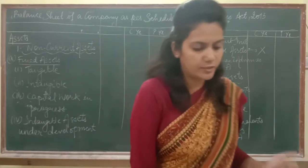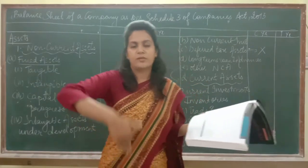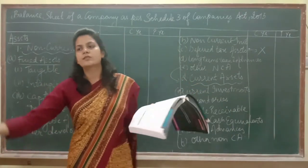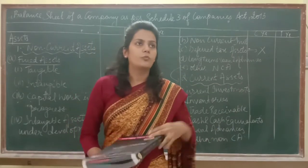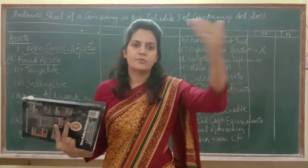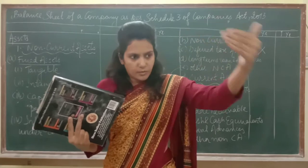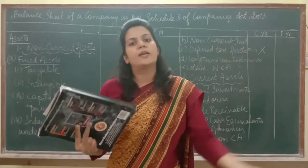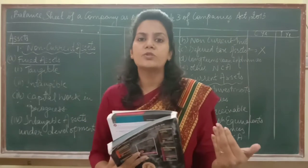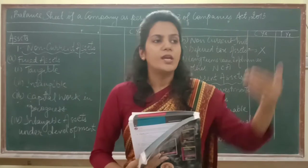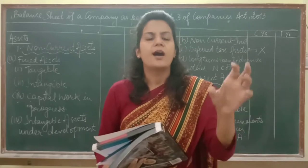Now let's discuss current assets. Current assets are those assets from which we are going to realize money within 12 months. One important point added to this definition is that it also includes assets realizable within the operating cycle period of the company. So if your operating cycle is 15 months, assets realized in the 13th or 14th month also qualify as current assets.